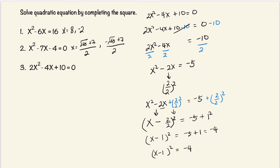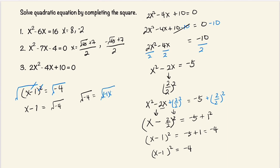It's equal to negative 4. x minus 1 squared is equal to negative 4. We're going to take the square root of both sides. This will cancel and become x minus 1 is equal to the square root of negative 4. The square root of a negative number is equal to the square root of negative 1 times 4. And now we're getting into imaginary numbers.